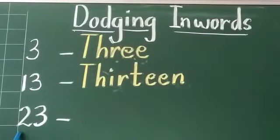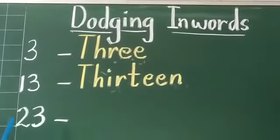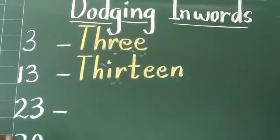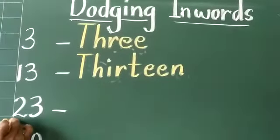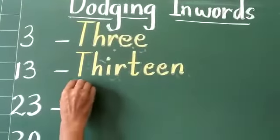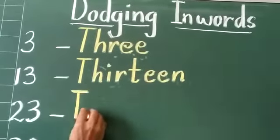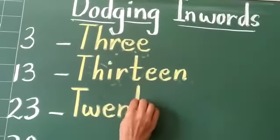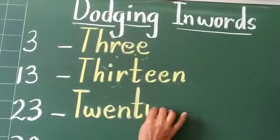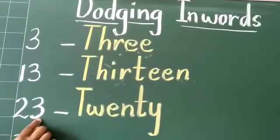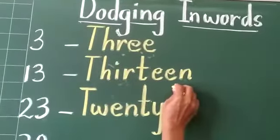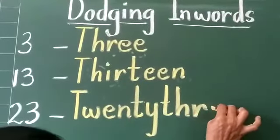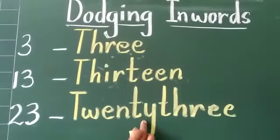The next number — can you identify? Yes, very good. 2, 3 — 20, 3. You are going to write the spelling of 20 first, because 2 is in front. T, W, E, N, T, Y. After 20, there is 3, so you are going to write the spelling of 3 here. T, H, R, E, E — 23.